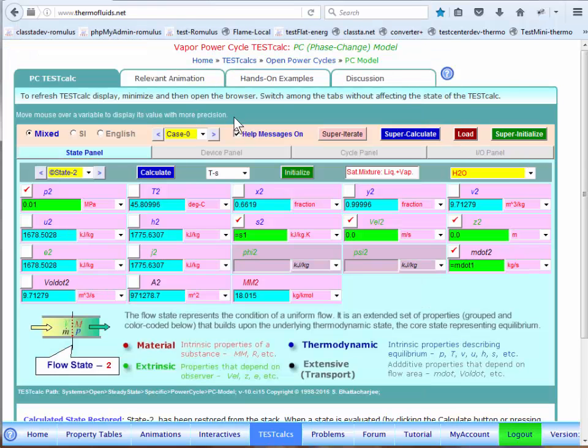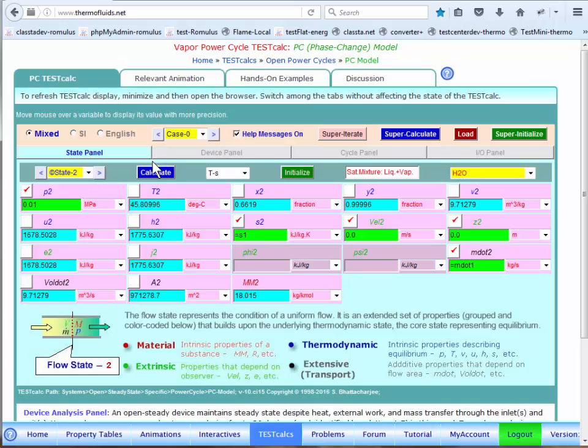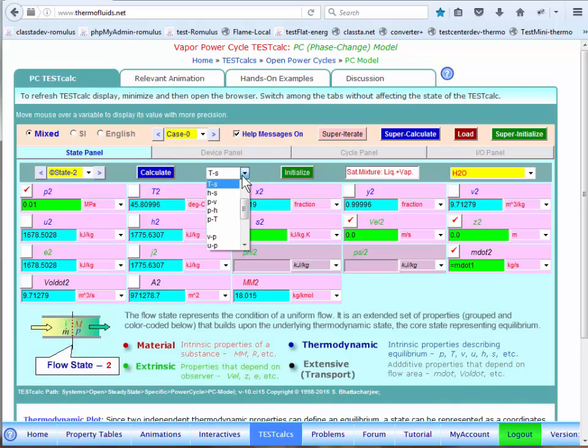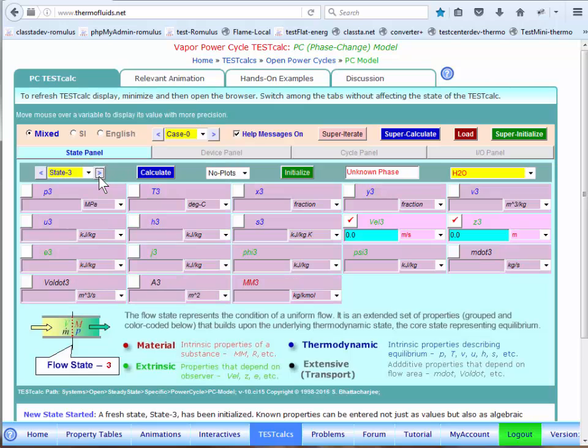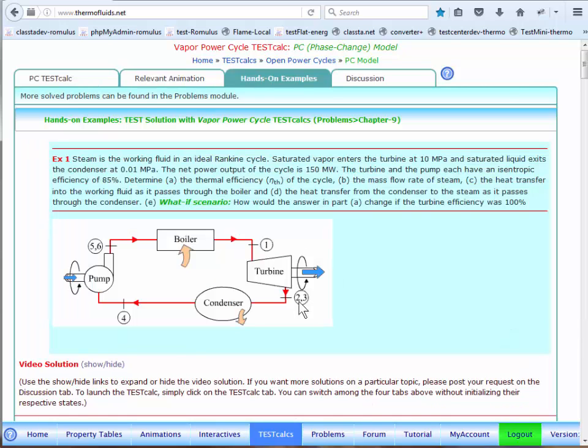Now we go to state two, which is the turbine exit state when it's isentropic. 0.01 MPa is the pressure. And it's isentropic exit, so therefore, entropy must be equal. And of course, mass flow rate must be the same. That gives us state two. We can turn off the plot every time by selecting no plots. Now state three is the actual exit state.